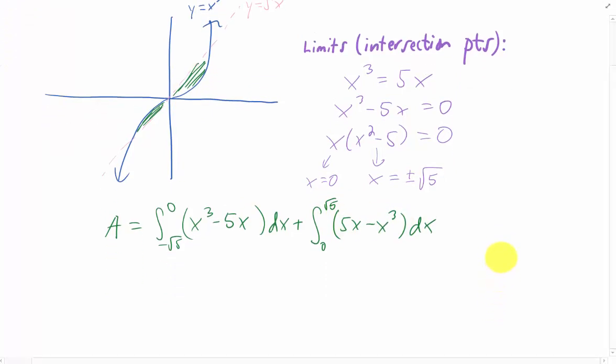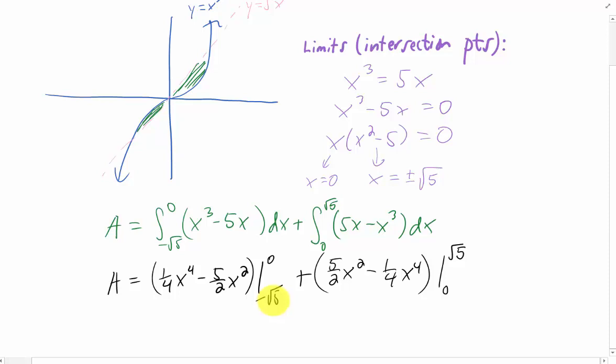It's a good thing that we're experts at integrating. We can integrate x cubed to get 1 fourth x to the fourth, and we can integrate negative 5x to get negative 5 halves x squared. And then all we have to do is plug in our oddly inconvenient limits, but this will give us a good opportunity for some algebra.